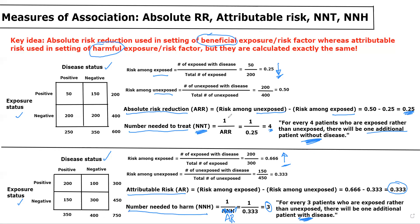So again, absolute risk reduction and attributable risk are basically the same exact concept, calculated in a very similar way. The only difference is that absolute risk reduction is used for beneficial exposures or risk factors, and attributable risk is used for harmful exposures or risk factors. Don't get confused about the difference between the two — recognize they're basically the same thing and two ways of looking at a similar problem. I recommend you try your hand at the associated practice questions to see whether you understand the material. Please like, comment, subscribe, and good luck.